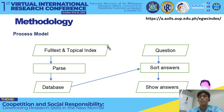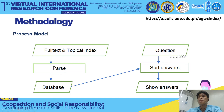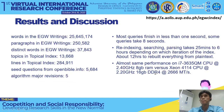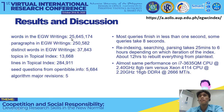Here is how it works: first we parse the full text and the topical index and put them into the database. We also download questions from OpenBible.info, sort the answers, and then show the answers. Questions can also come from users. The interesting part is the algorithm for sorting the answers.